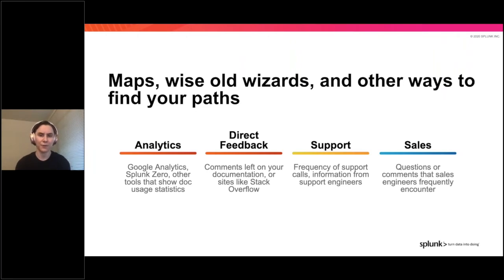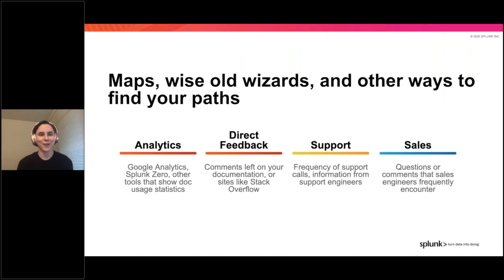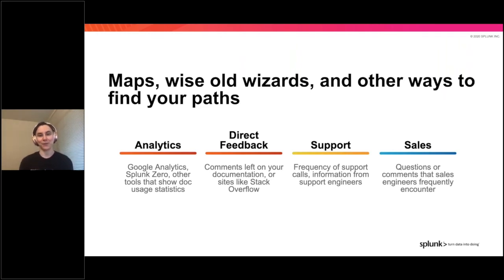All of these different avenues have two things in common. First, they let you iterate — you can use these sources, make changes to your docs, and then see what new feedback comes down the pipeline. If you look at feedback before and after making a change, you can often catch things that would have been easy to miss otherwise. If a constant barrage of frustrated comments about a certain topic suddenly stops when you add a new tutorial on that topic, that's obviously a success. No news is definitely good news, and you might have missed that if you hadn't been monitoring those channels before you made the change.